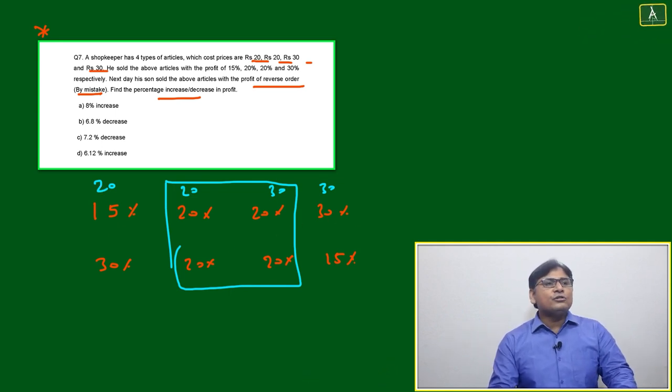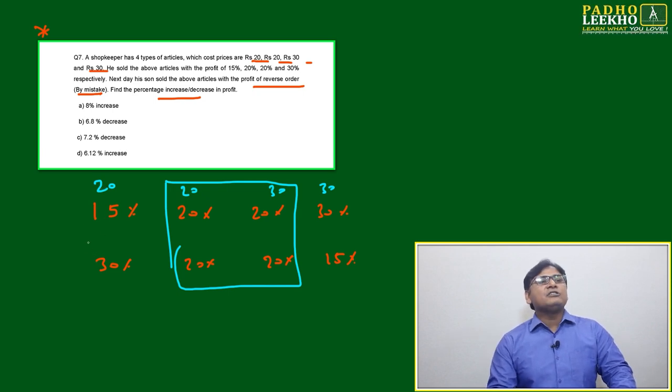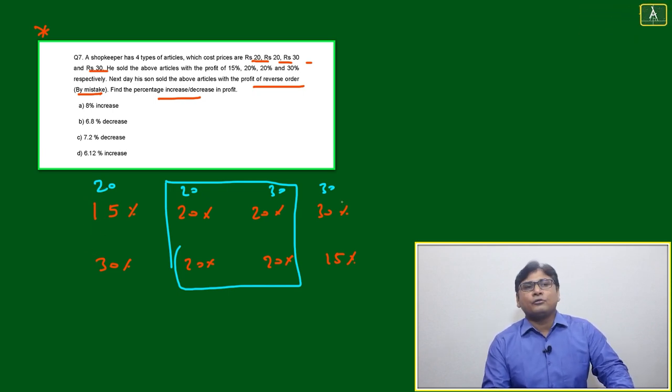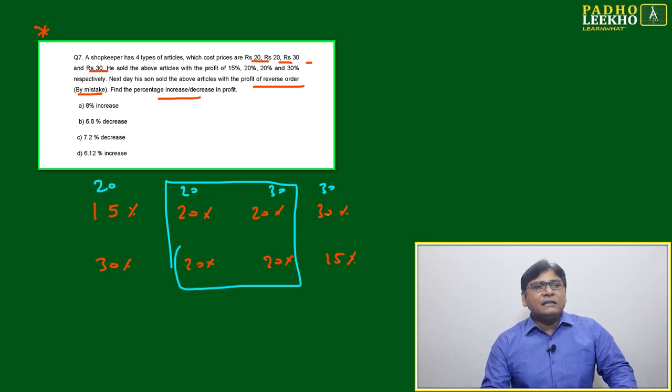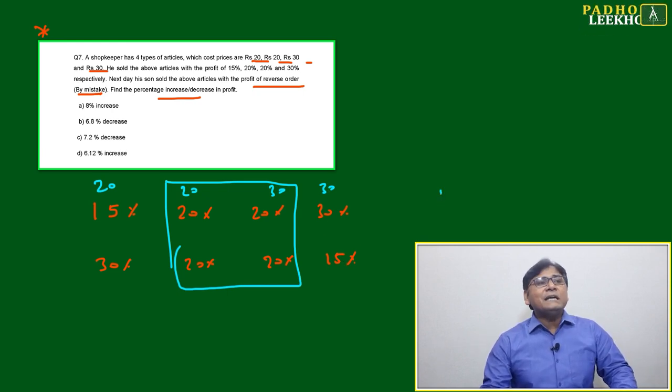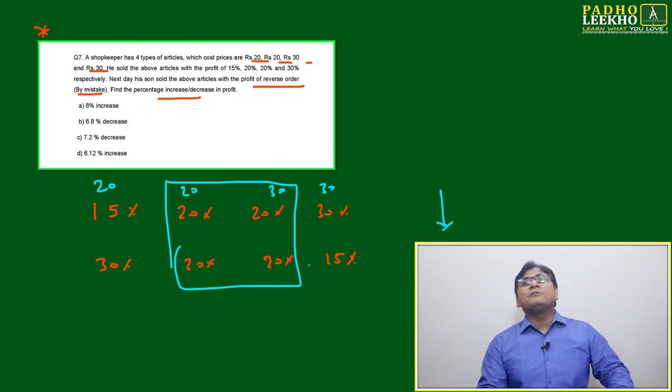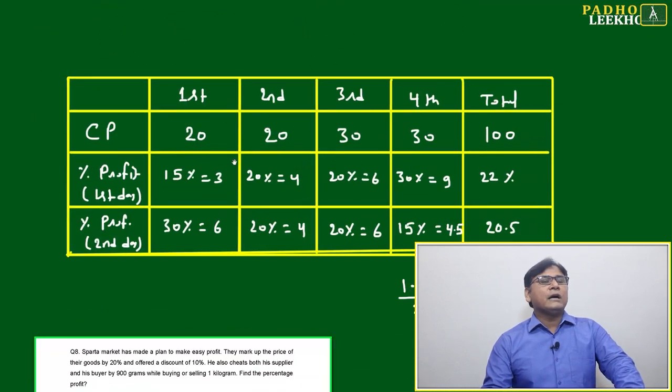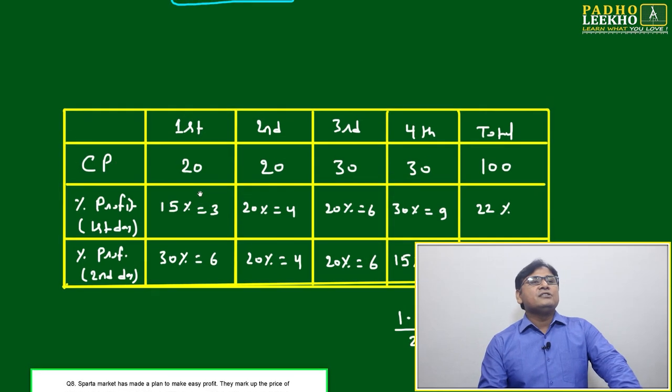Earlier it was 15% out of 20, now it is 30% out of 20. Here it was 30% of 30, now it has become 15% of 30. The net effect will be down. Let's calculate it this way.